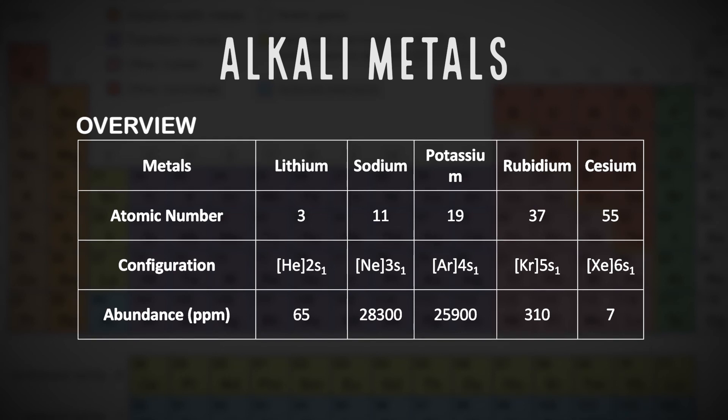Here in the table, we can see a general overview of the characteristic properties of the alkali metals, including atomic number, electron configuration, abundance, density, and atomic size.